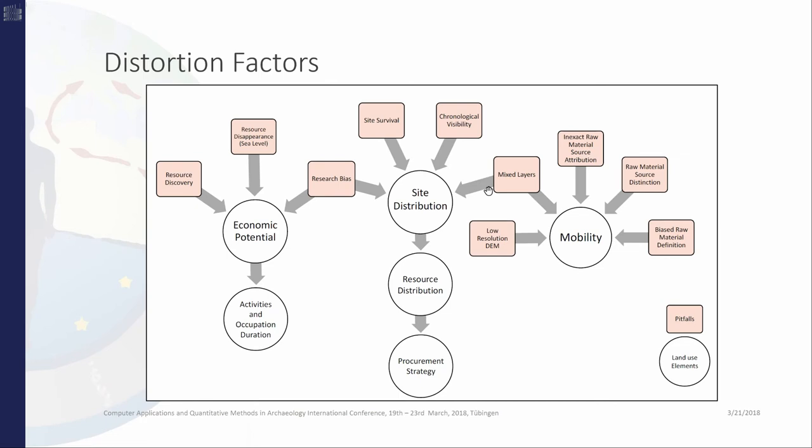The economic potential analysis can be distorted by knowledge gaps concerning resources or sites, as well as any kind of research biases. If this is distorted, it keeps going further and distorts the characterization of activities and occupation duration of the site. Research biases can also distort site distribution along with other factors such as uneven site survival, chronological visibility, and layer mixture. This can affect the characterization of resource distribution and the procurement strategy.